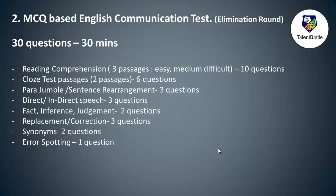There were three questions on para jumble or sentence rearrangement — four sentences are given out of order and you need to arrange them correctly, with options provided. Then there were three questions on direct and indirect speech, where you may need to convert a sentence from direct to indirect speech, indirect to direct, or identify whether a given sentence is in direct or indirect speech.